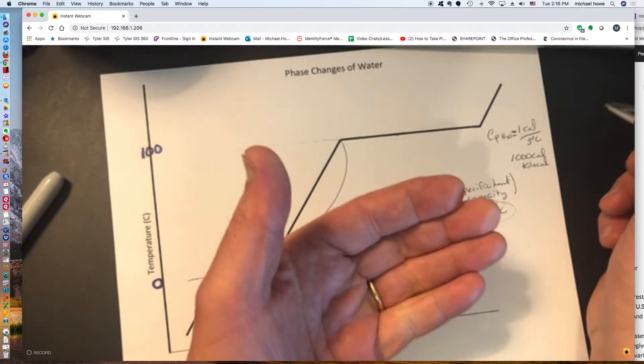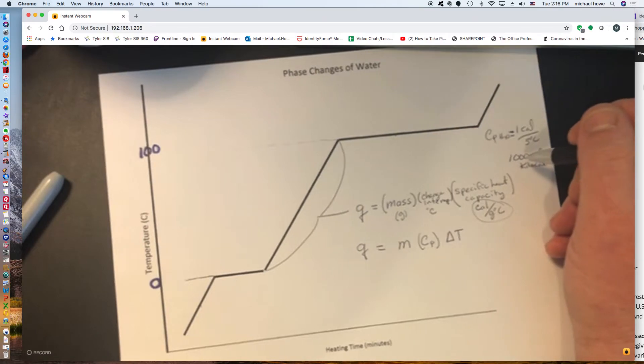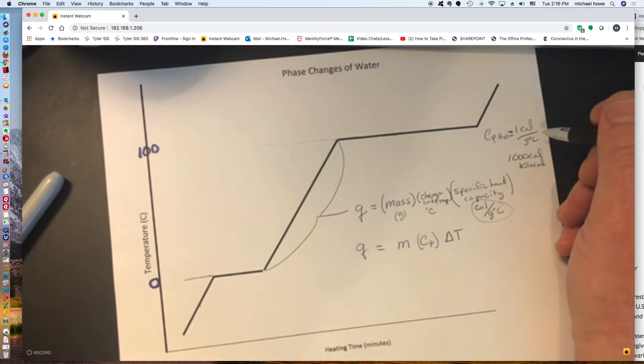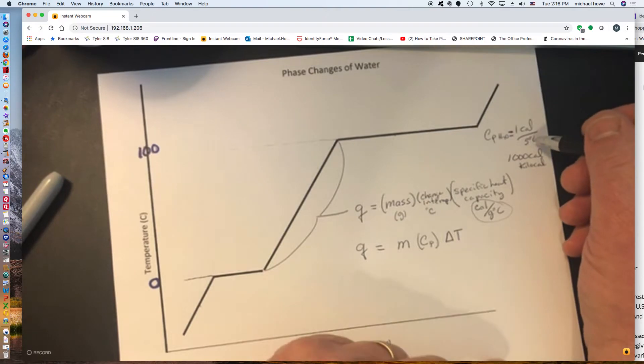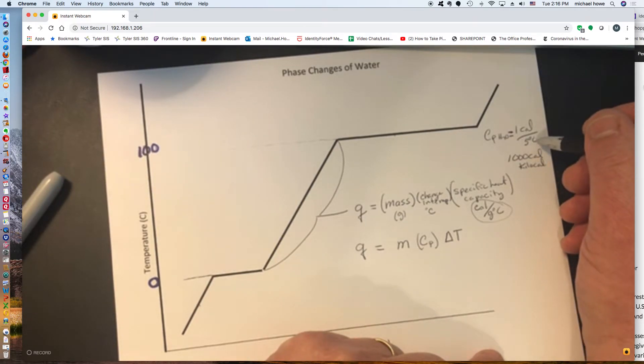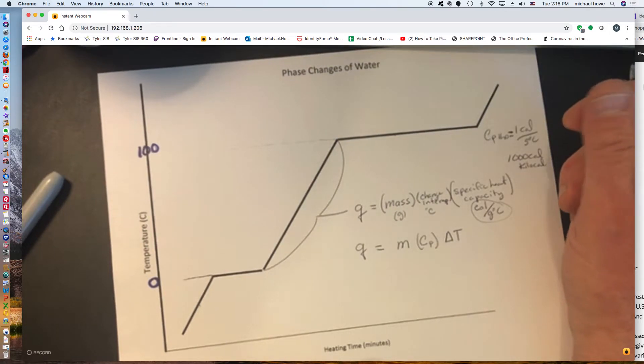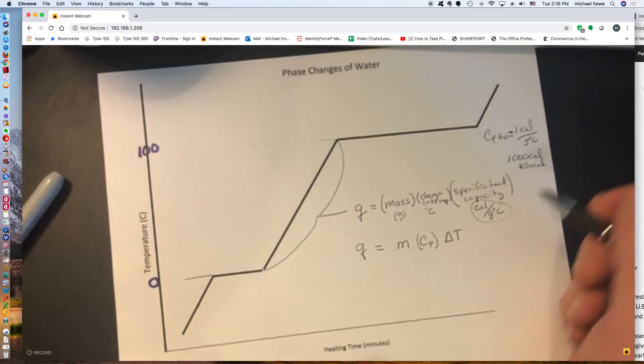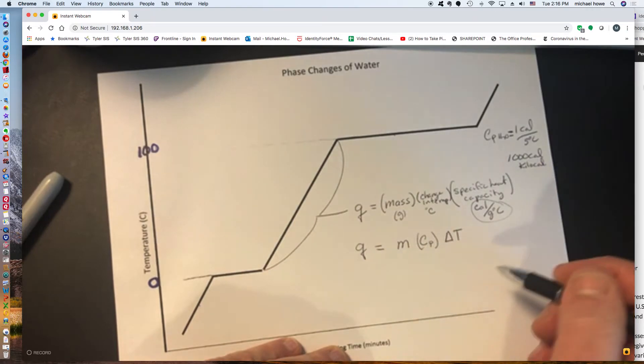So when we say one food calorie, like a Milky Way bar might have 250 calories in it, it really is 250,000 calories. So what is a calorie? It's simply a unit of heat energy. It's how much energy it takes to raise one gram of water by one degree C. One gram is about the size of an M&M. So it doesn't take an awfully huge quantity of energy to raise that small amount by one degree. So this formula applies any place on this graph where there is a temperature change.